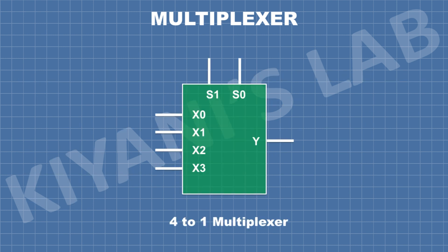This is the symbol of 4-to-1 multiplexer. It has two select lines S0 and S1. It has four input lines from X0 to X3 and it has one output line.